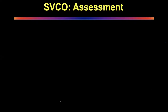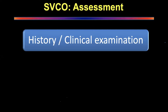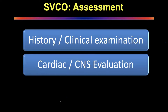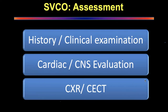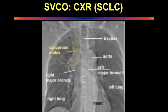Treat urgently if the patient presents in stage three, four, or five. All assessment starts with history and clinical examination — a very good clinical examination will give you the diagnosis. It is mandatory that all these patients have cardiac evaluation and CNS evaluation, because if either is compromised you want to quickly sort out the SVC before looking for the diagnosis. The basic investigations are chest X-ray and contrast-enhanced CT, either of which will give a very good clue as to what is happening.